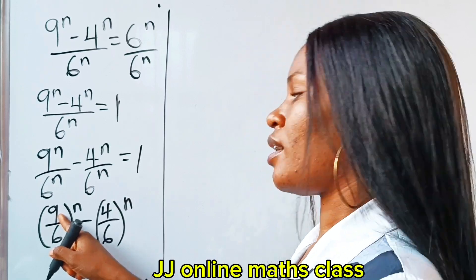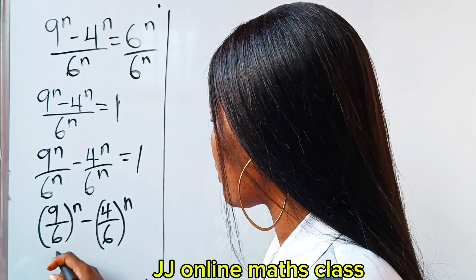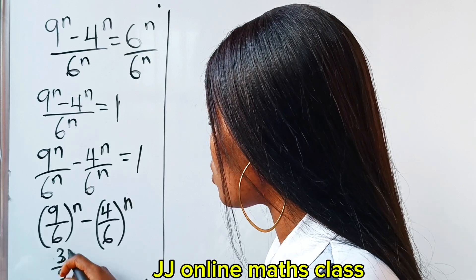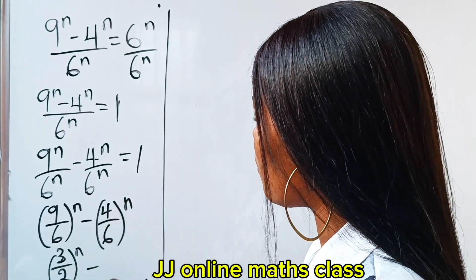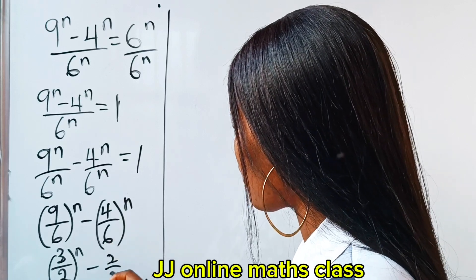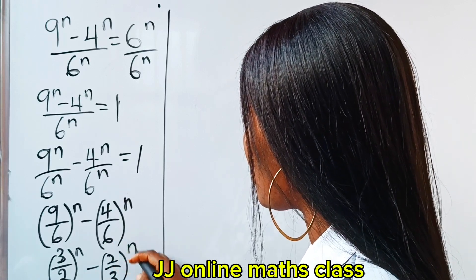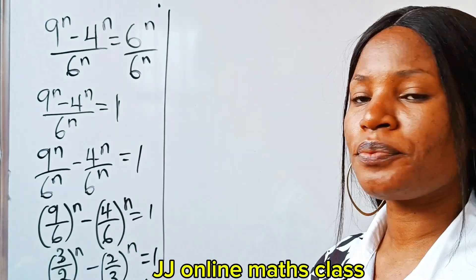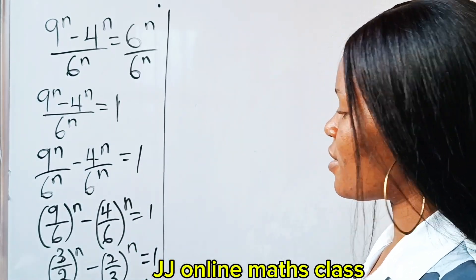When 3 divides 9 you get 3, and 3 divides 6 gives 2, so the first term becomes (3/2)^n. For the second term, 2 divides 4 gives 2 and 2 divides 6 gives 3, so it becomes (2/3)^n. Our equation is now (3/2)^n minus (2/3)^n equals one.